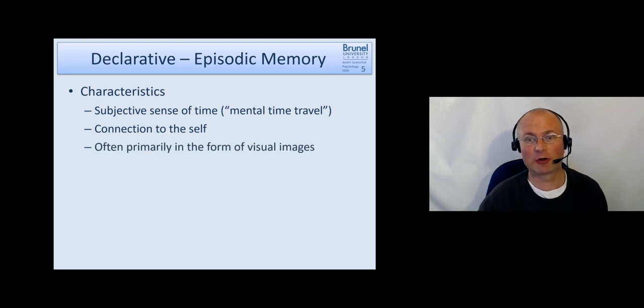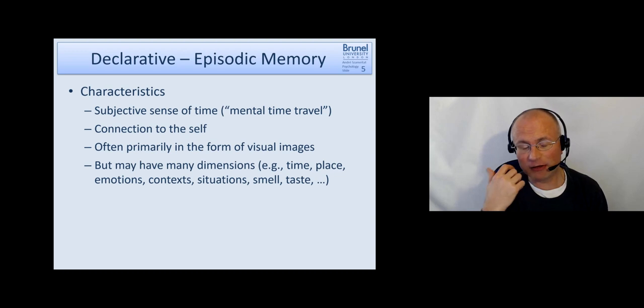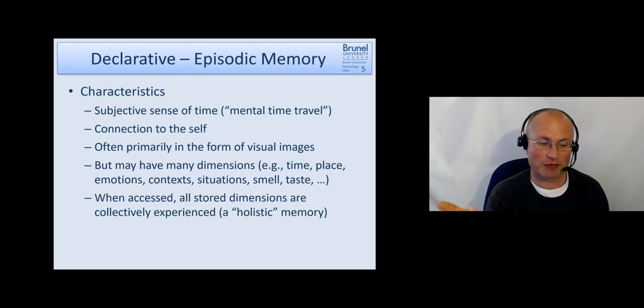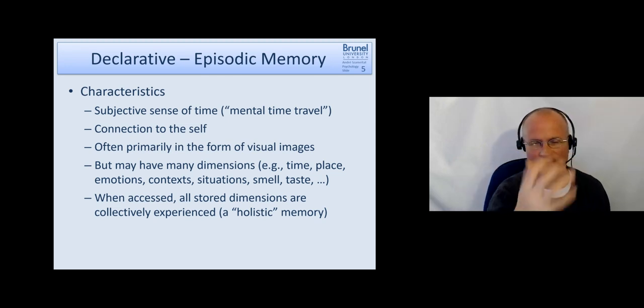It often has the primary form of visual images, so we know it was this scene, it looked like that. But it can be a very holistic experience. So we also have the time, place, the emotions we felt, the context. We can say I remember that particular thing and that happened because person A said something to person B. We also may remember the smell and the taste of things. When we try to recall such a memory, most of the time it's recalled as a holistic memory, everything in one go. It's rare that we just remember the taste of that event without also remembering who was there, having a visual image and things like that.